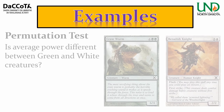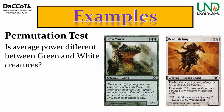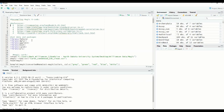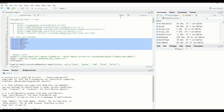Let's jump into our first question using a permutation test: is average power different between green and white creatures? Power is how much damage a creature does. We're asking if there is a difference between green creatures and white creatures.